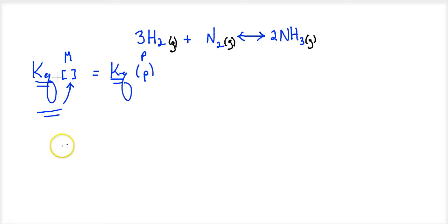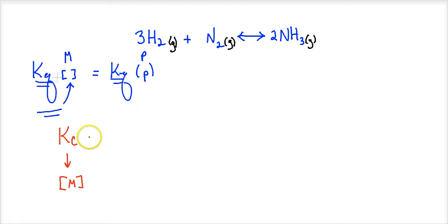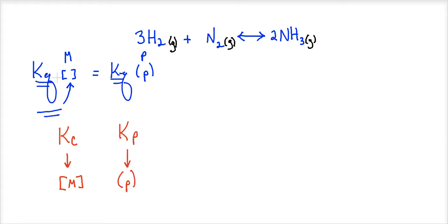What we're going to do is find a way to convert from what we call KC — that's the equilibrium constant dealing with concentrations or molarities, where we use brackets — and show how we can connect or build a formula that helps us convert an equilibrium constant in molarities to one that deals with partial pressures, where we use parentheses. Both types tell us essentially the same thing thermodynamically, but converting from one to the other takes an equation, so we're going to derive that.